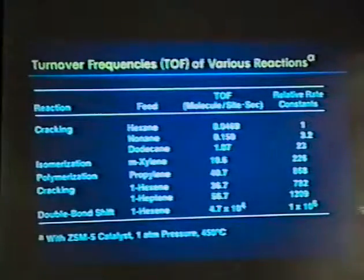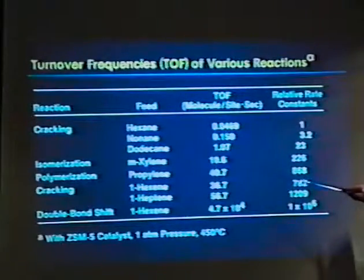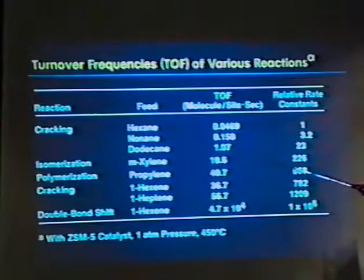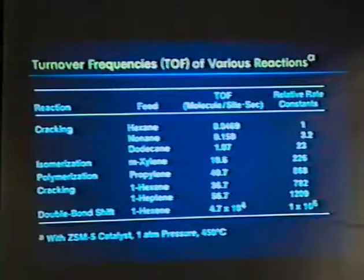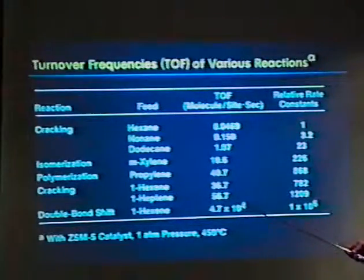This is, of course, if you go to branched molecules, this is not true. And for xylene isomerization, you have to be very careful that it becomes diffusion limited, because the diffusion rate is five orders of magnitude slower than that for the linear one. Okay. Next slide please.